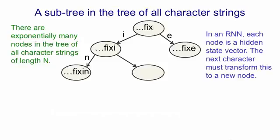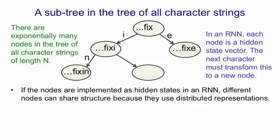In an RNN, we try and deal with the fact that the full tree is enormous by using a hidden state vector to represent each of these nodes. So now what the next character has to do is take the hidden state vector that's representing a whole string of characters followed by F, I, X. And operate on that hidden state vector to produce the appropriate new hidden state vector if the next character was an I. So when you see an I, you want to turn the hidden state vector into a new hidden state vector.